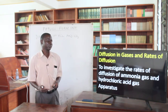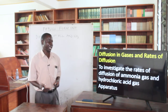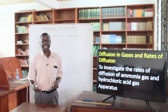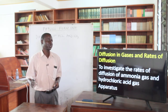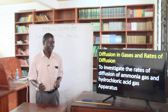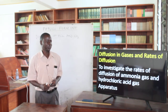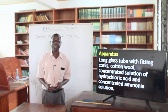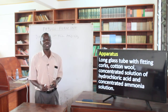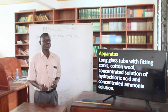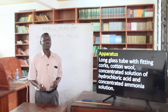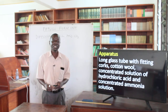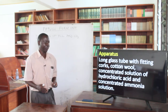To investigate the rates of diffusion of ammonia gas and hydrochloric acid gas, this activity is done in a long glass tube — we call it a combustion chamber — fitted with cocks, cotton wool, concentrated solution of hydrochloric acid, and concentrated ammonia solution. Both of them have to be very concentrated.